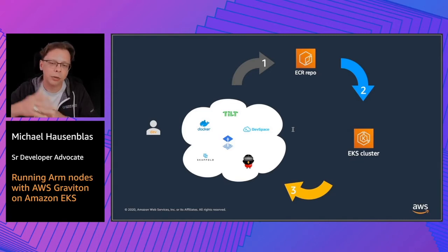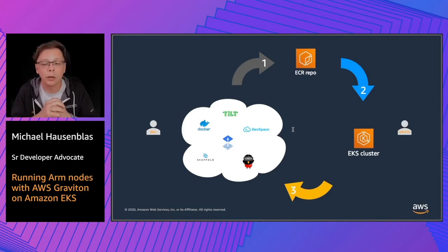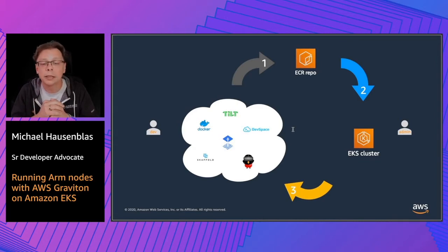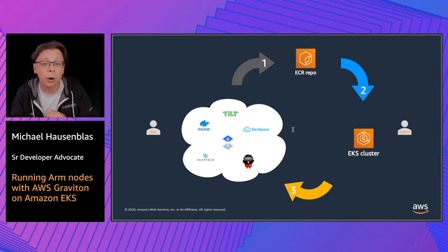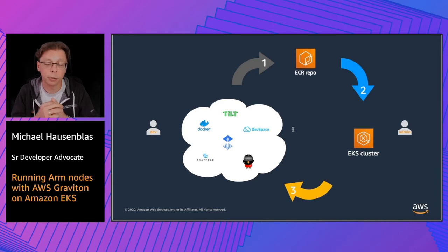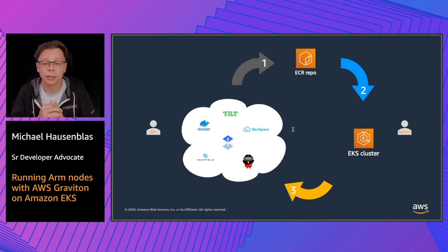That also is the handover to the operational side of the house, where you have, for example, a cluster admin looking after the EKS cluster, and the container runtime — technically the kubelet through the CRI, the container runtime interface — pulls that container image from the repository and makes it available to run on that node in the cluster.